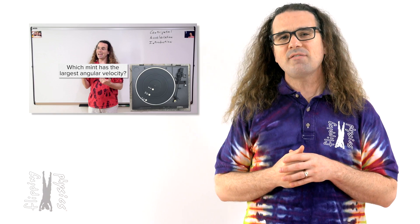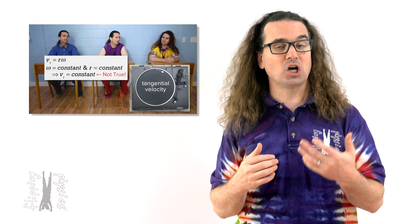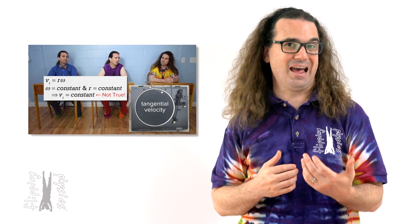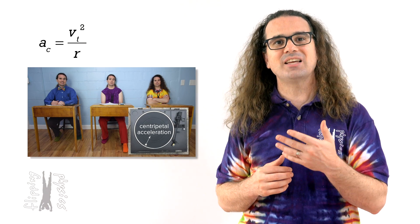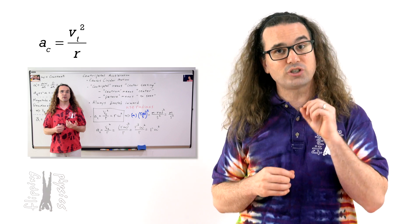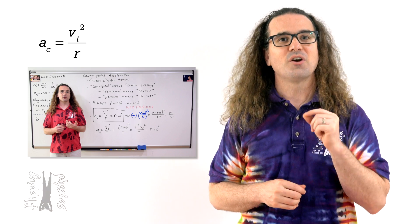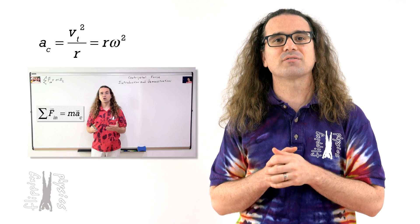Good morning. We have already learned about the equation for centripetal acceleration, or the center-seeking acceleration acting on an object when it is moving along a circular path. The magnitude of centripetal acceleration equals the magnitude of tangential velocity squared over radius, which also equals radius times the square of the magnitude of angular velocity.